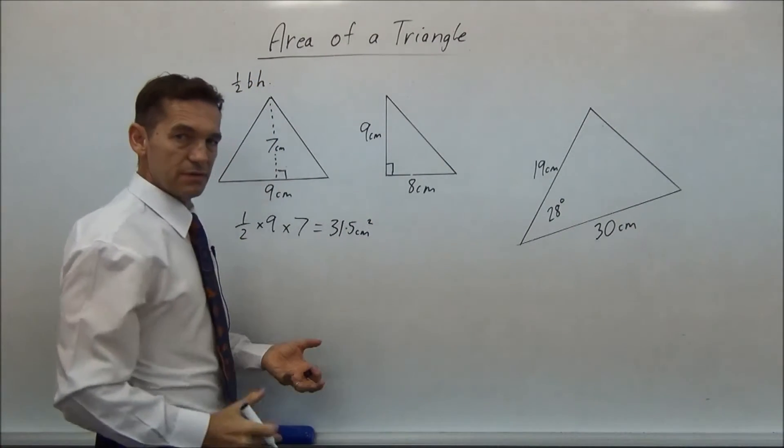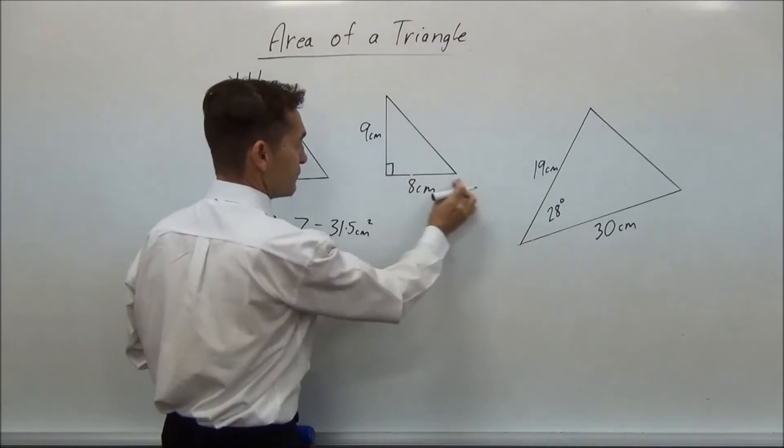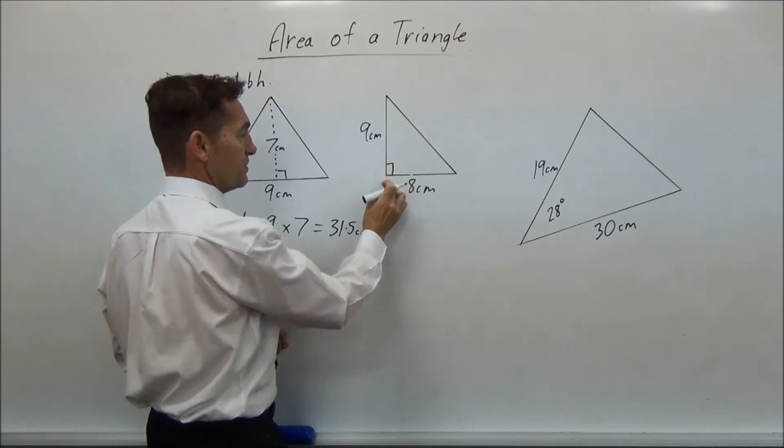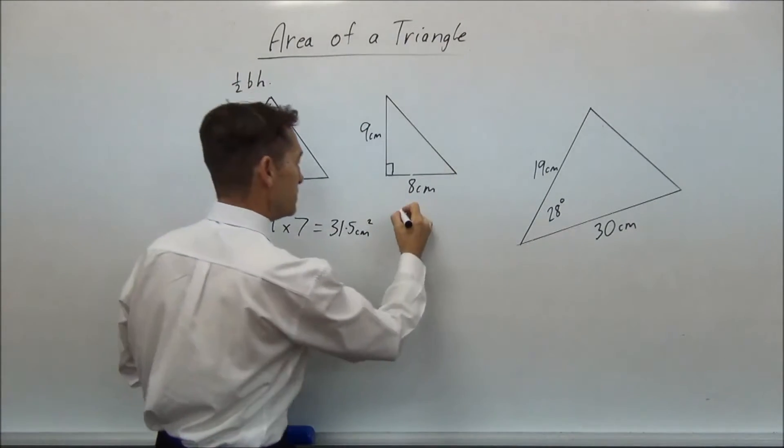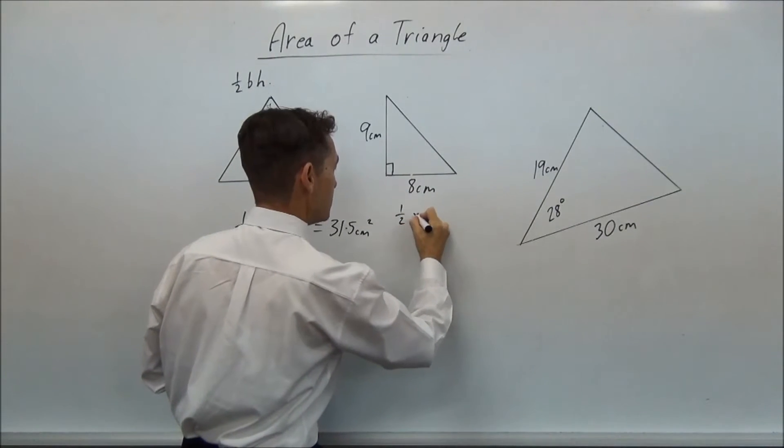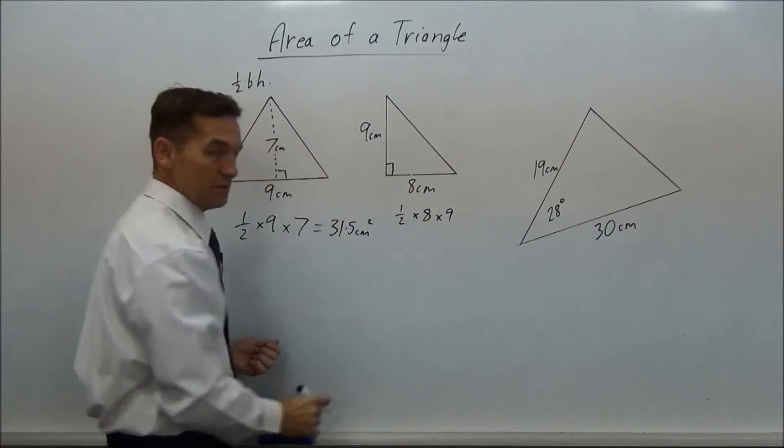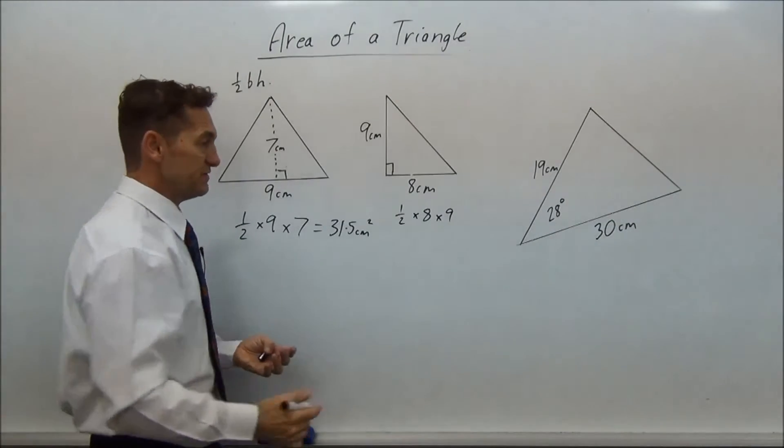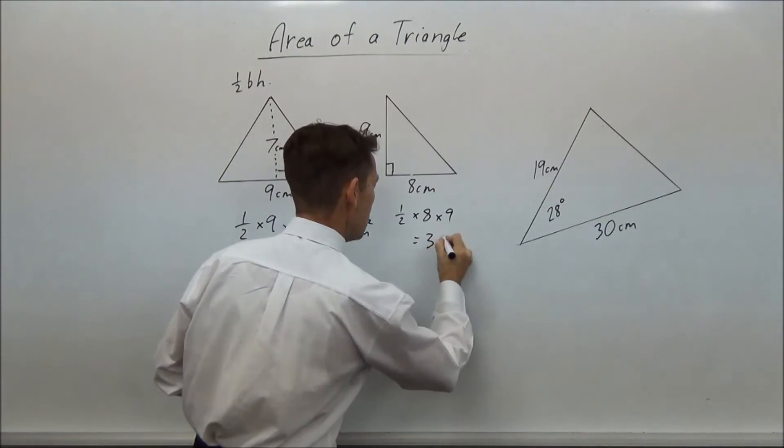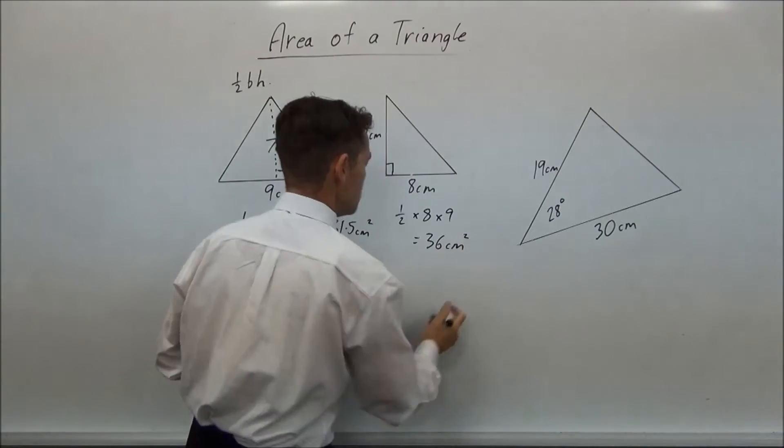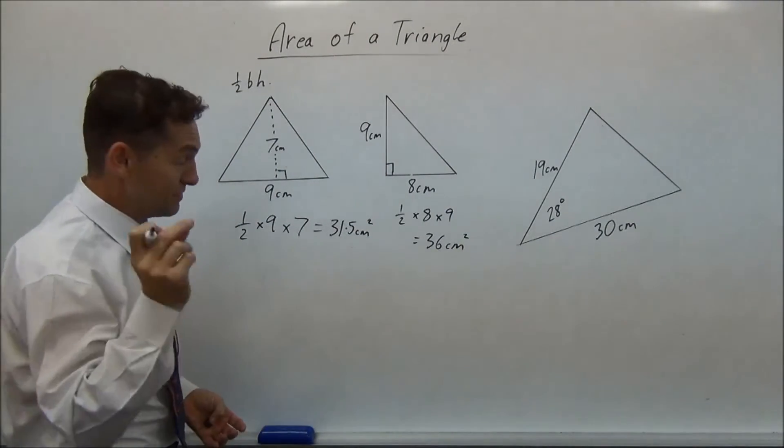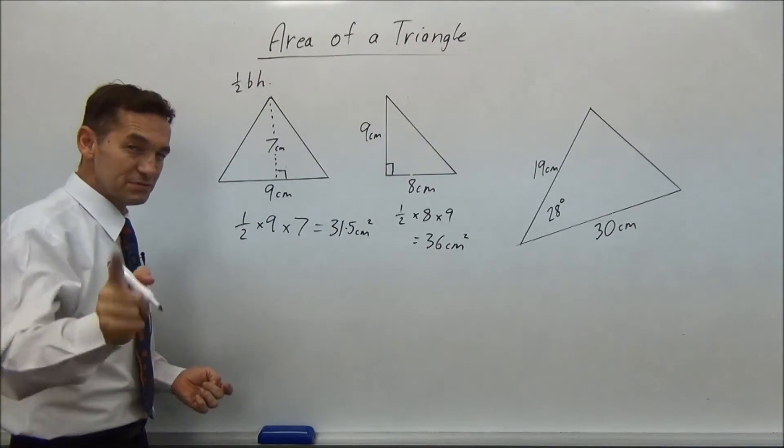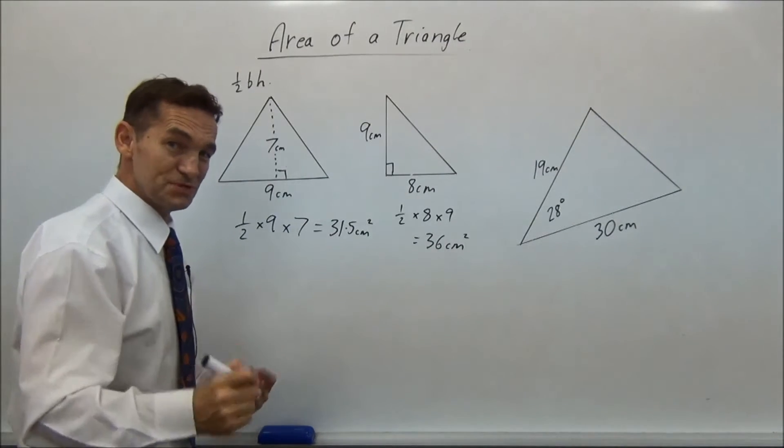Look at this one, I can do that too. Half the base times the height, because there's a right angle, you know that that's automatically the height, so you just go half multiplied by eight, multiplied by nine. Nine times eight is 72, half of 72 equals 36 cm squared. You could punch it in your calculator if you weren't up to scratch on your times tables. Well then your times tables, it speeds you up.